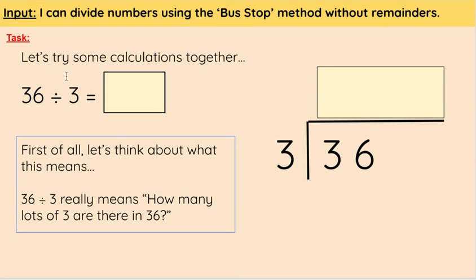So for the bus stop method, we're going to need to draw our bus stop. So here we are with our bus stop, and then we can put the large number inside the bus stop. So here we have our 36, and then we can put the small number, which we call the divisor, outside the bus stop.